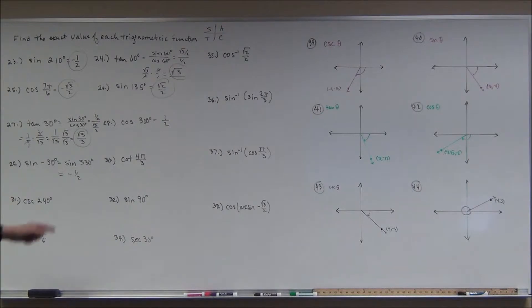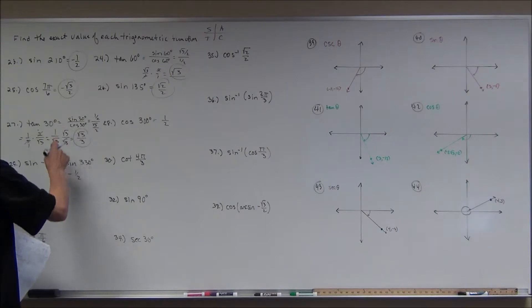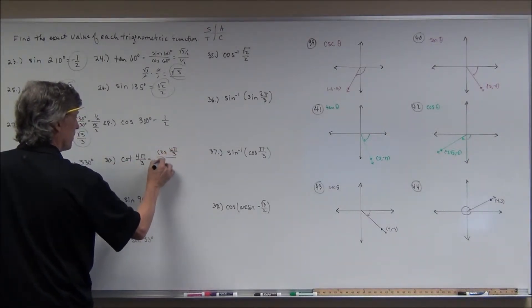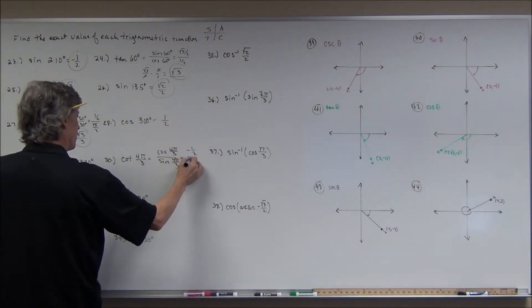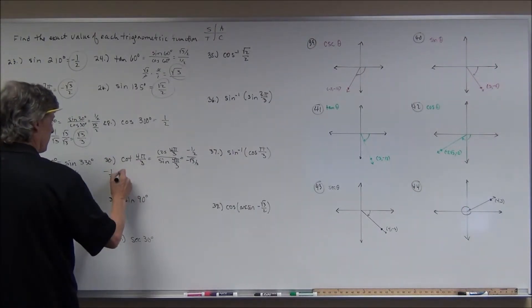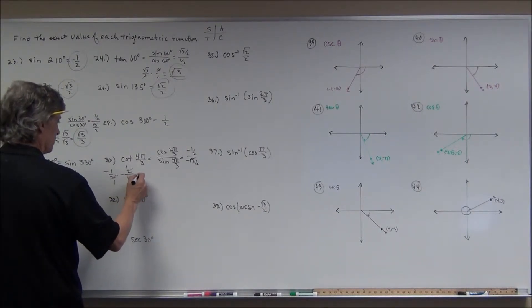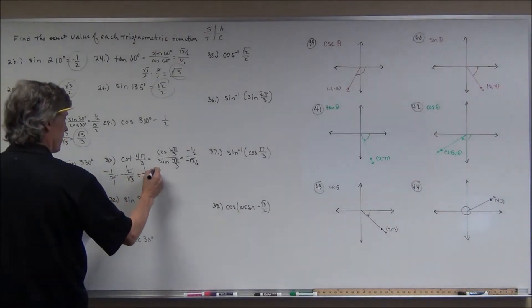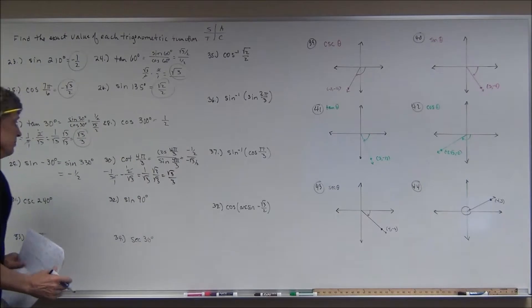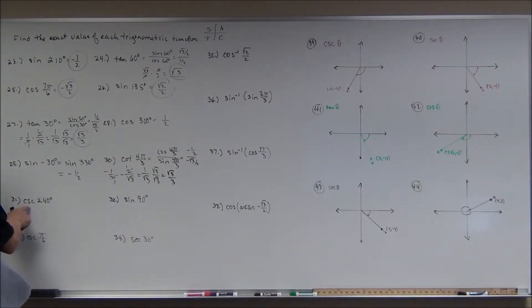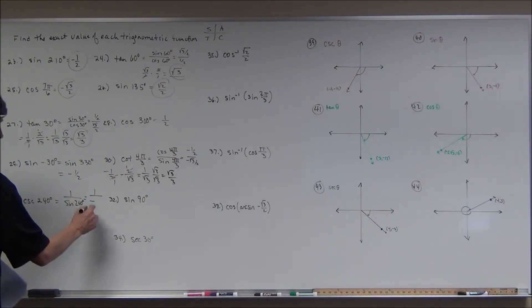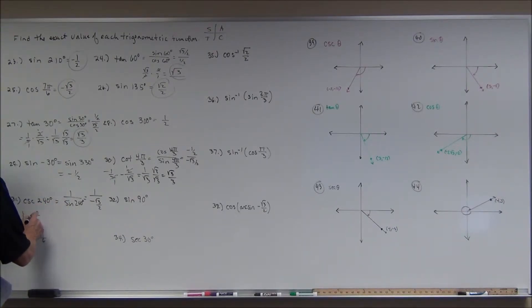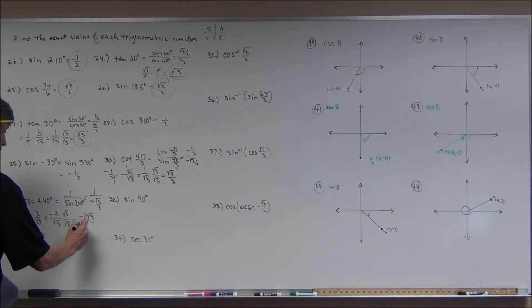The cotangent of 4π over 3 is the reciprocal of tangent, which means cosine over sine. The cosine of 4π over 3 is in the third quadrant: negative 1/2. The sine is negative square root of 3 over 2. So that's negative 1/2 times the reciprocal, negative 2 over square root of 3. Negative times negative is positive, giving 1 over square root of 3. Rationalize the denominator: square root of 3 over 3. The cosecant of 240 degrees is 1 over sine of 240 degrees, which is 1 over negative square root of 3 over 2. Rationalize to get negative 2 square root of 3 over 3.